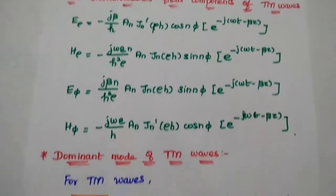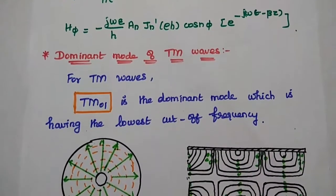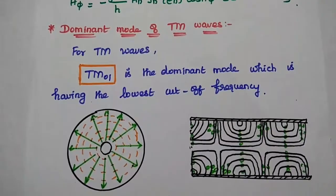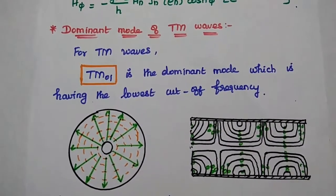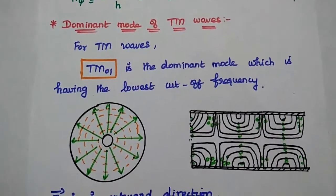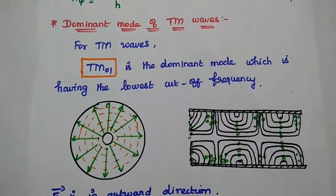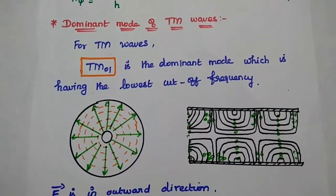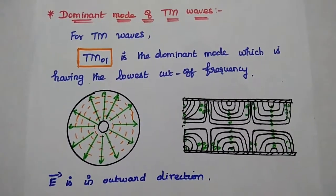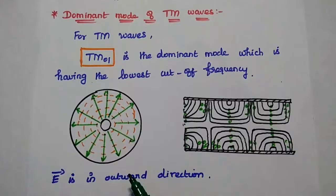Next, the dominant mode of TEM waves. For TEM waves, TEM01 is the dominant mode. Dominant mode means the mode which has the lowest cutoff frequency. For TEM waves, TEM01 is the dominant mode with the lowest cutoff frequency. In TEM waves, the electric field is in the outward direction. This is the cross-sectional view of these TEM waves.